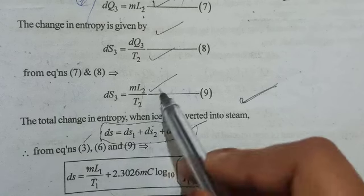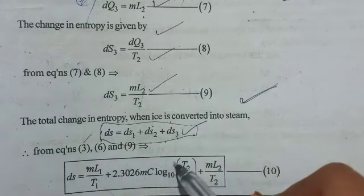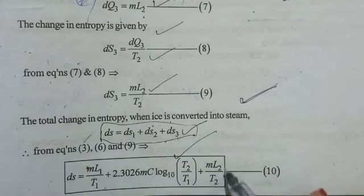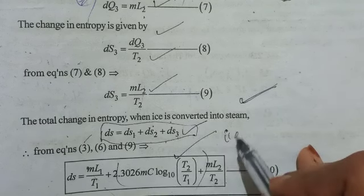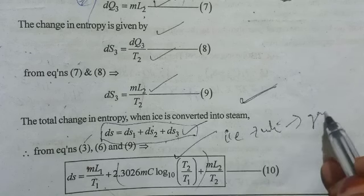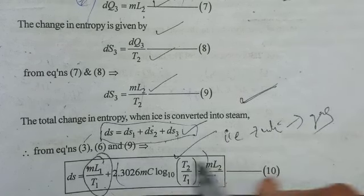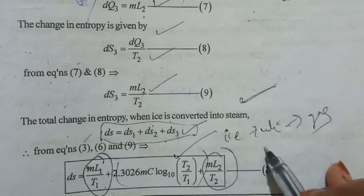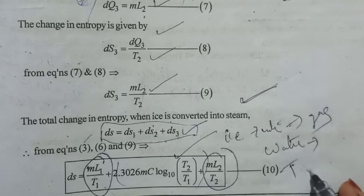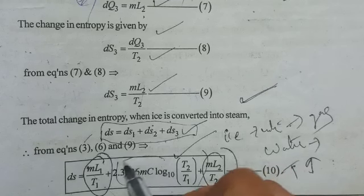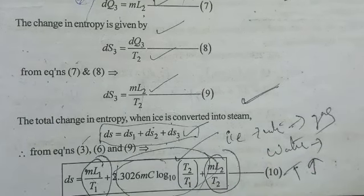So we find dS1, dS2, and dS3 values. The total is mL1 by T1 plus 2.3026 mC log10(T2/T1) plus mL2 by T2. We normally find the entropy change from ice to water, then water heating, then water to gas.